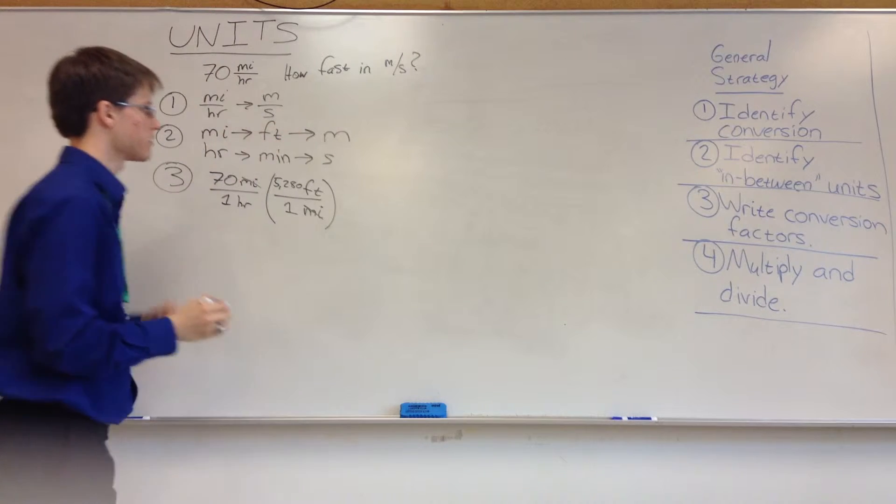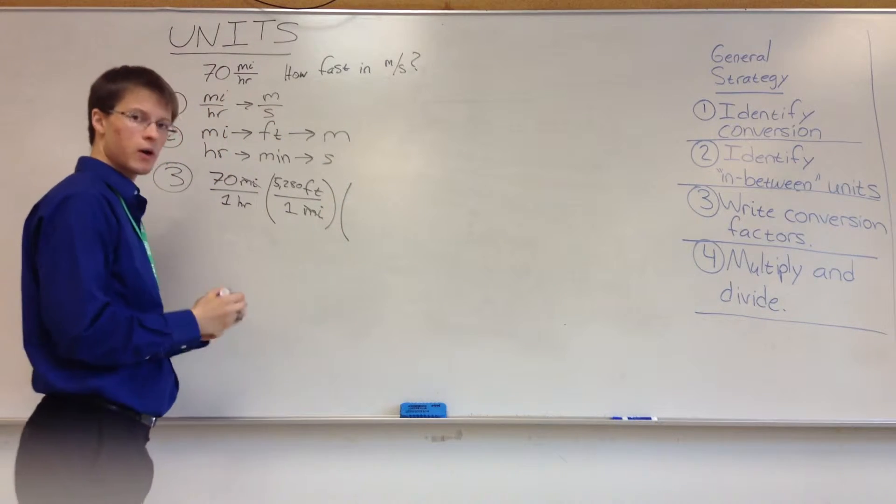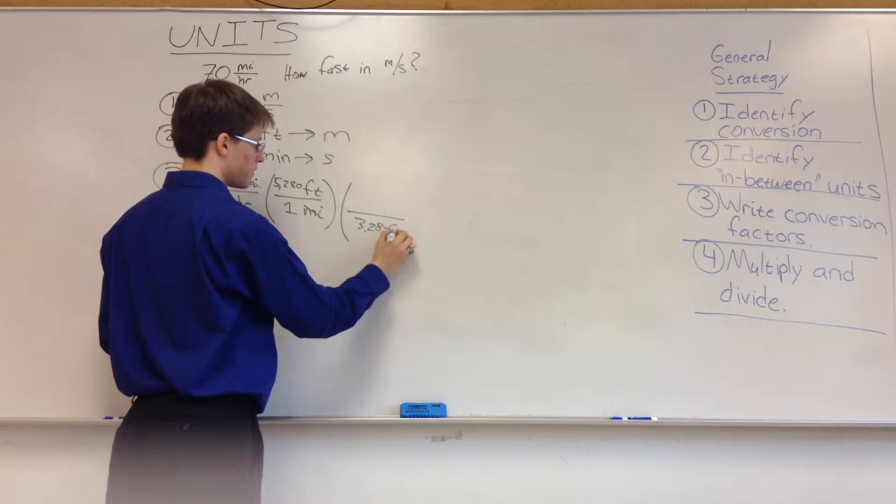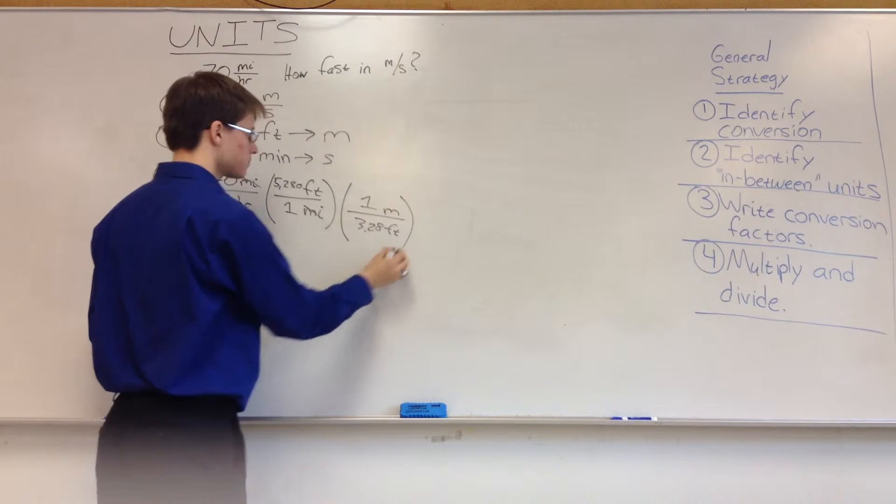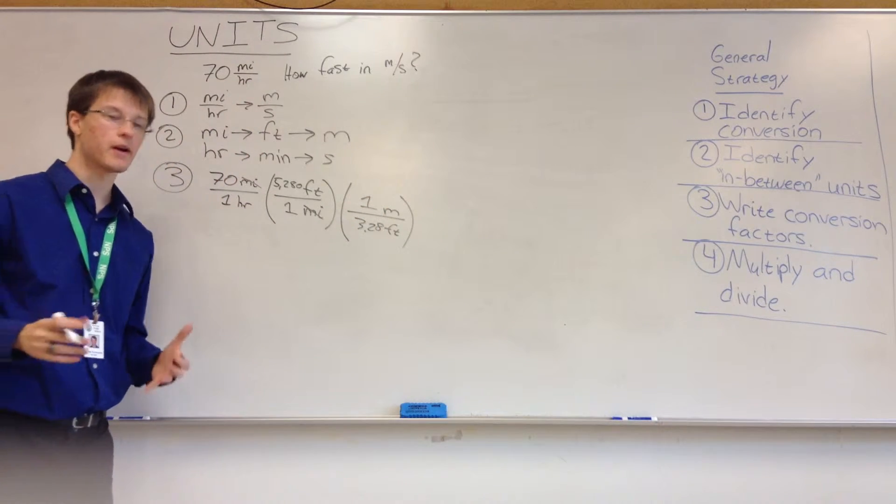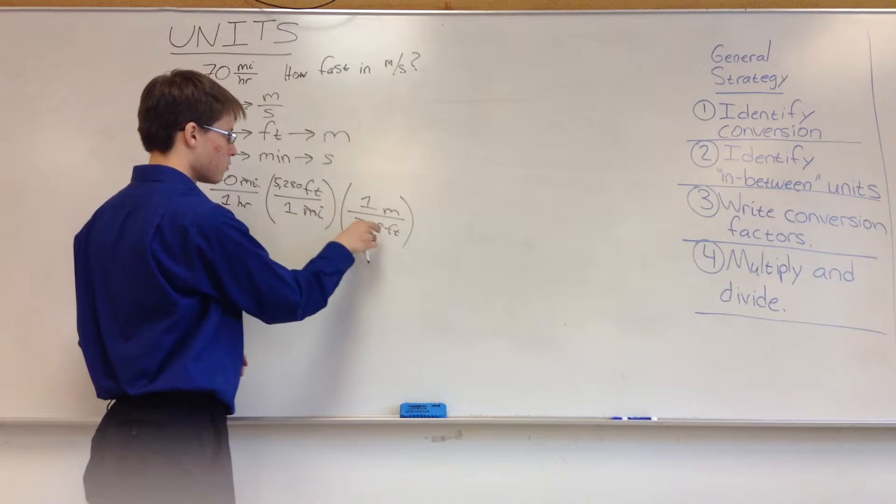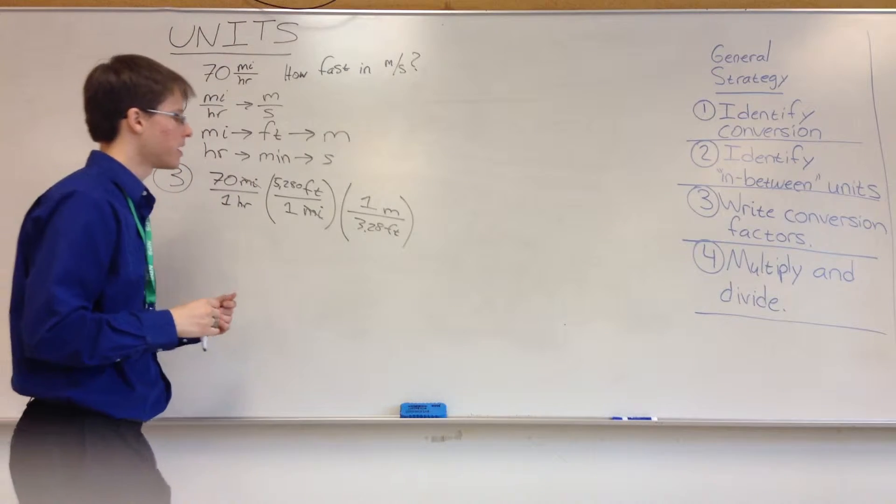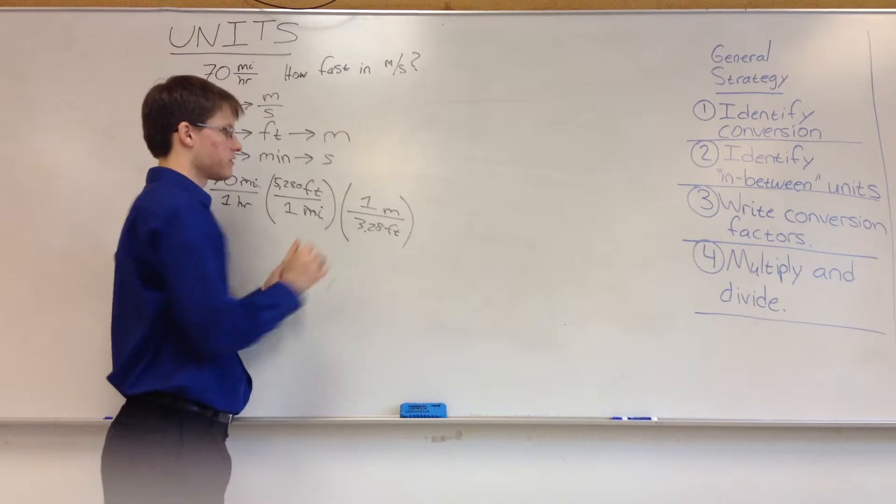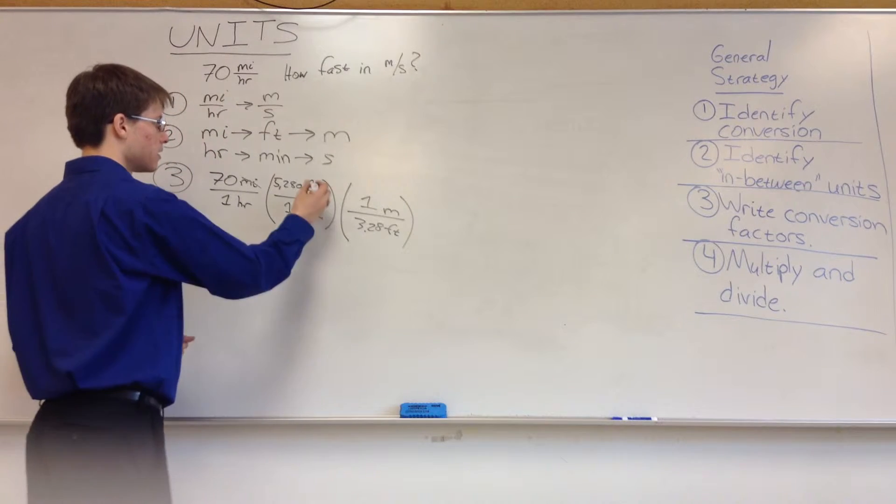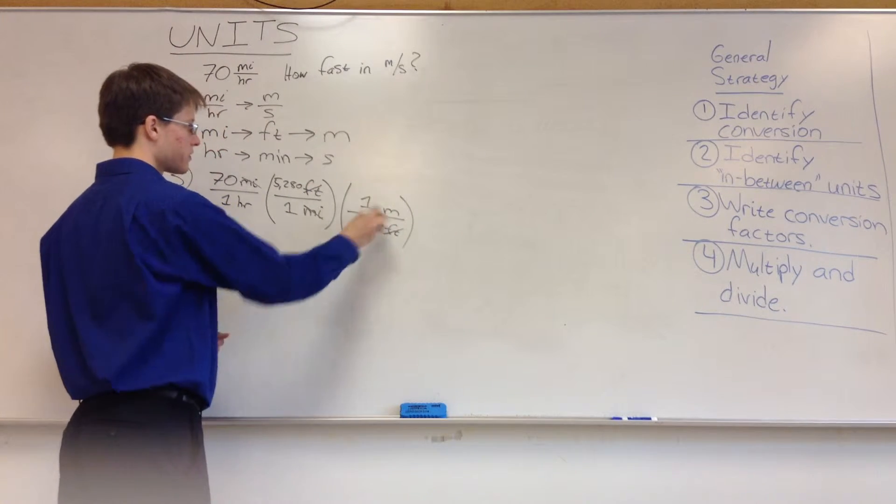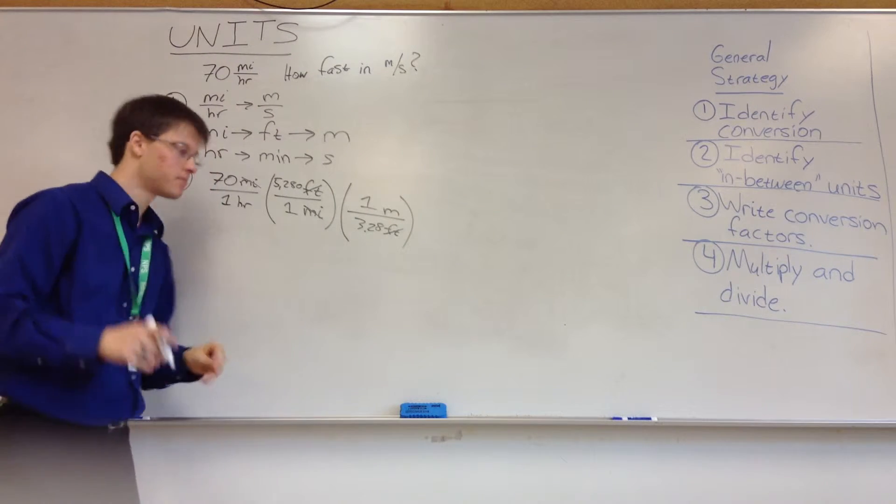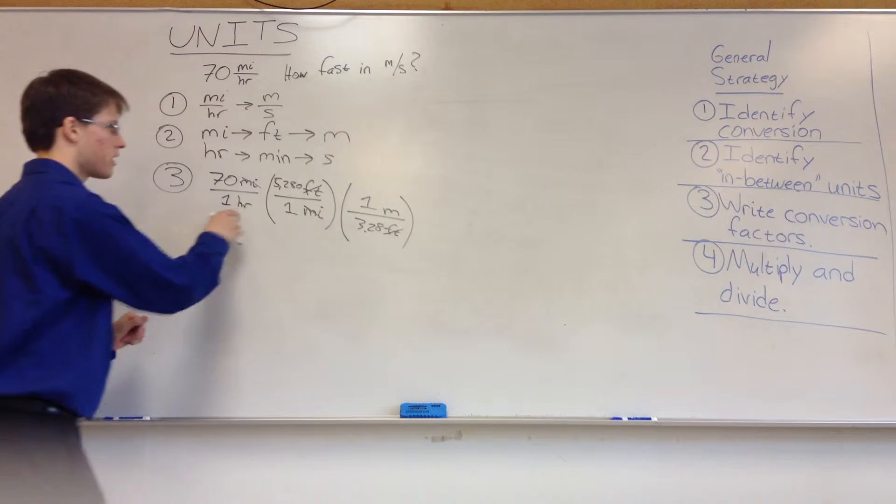And then we need to get to meters. And I believe in a previous video, I mentioned that there are 3.28 feet in one meter. And we want feet on the bottom here, because I know we've only seen so far numbers that are one on the bottom, units that have only one on the bottom. But it's actually perfectly fine to put a number that is not one on the bottom. And that's actually what we have to do here in order to cancel out the feet. So now we're left with meters, which is exactly what we want. But only half, because we also want seconds.